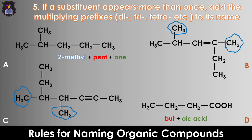Rule 5: If a particular substituent appears more than once, then the multiplying prefixes di, tri, tetra are used to indicate the number of units of such substituents. In compounds B and C, the methyl substituent appears more than once, so in addition to their positional numbers, the multiplying prefix di will be attached to the name. Therefore, the appropriate prefix for compound B is 2,4-dimethyl, while that for compound C is 4,5-dimethyl.